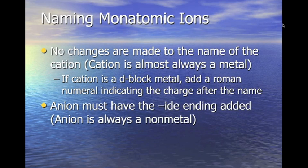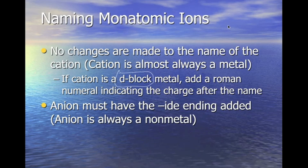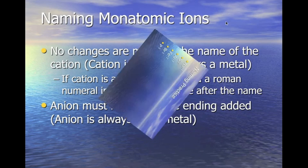When naming monatomic ions, no changes are made to the name of the cation — meaning no changes to the metals — except if the metal is a D-block metal, where we must add the Roman numeral in parentheses. The anion must have the -ide ending added to it. Remember, the anion is always the non-metal. When metals and non-metals come together, that's ionic bonding.